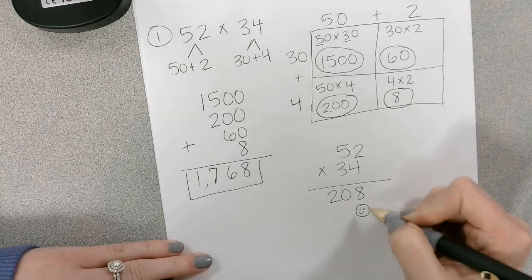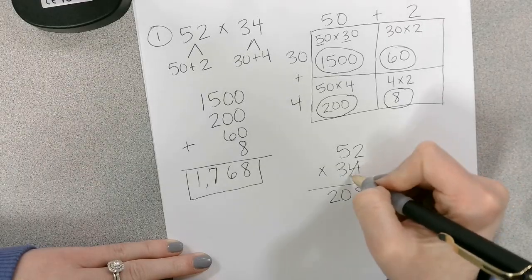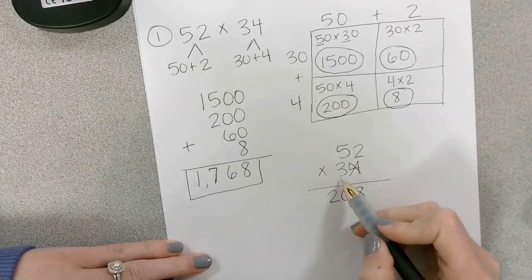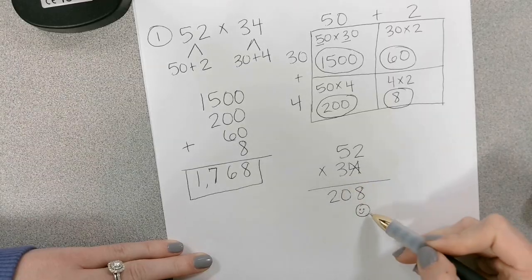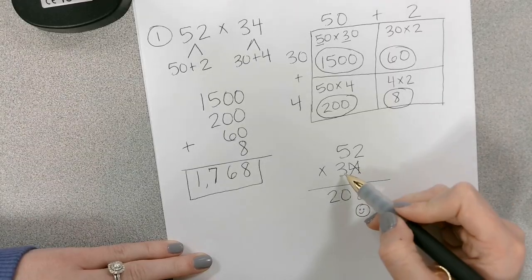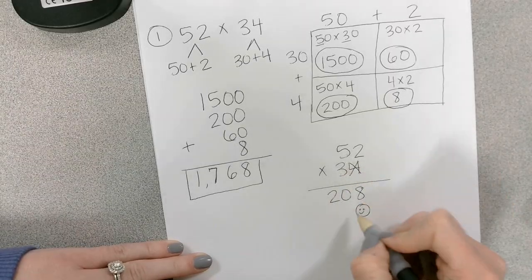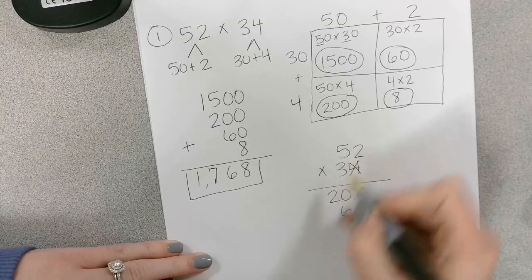And we have to drop that zero. I like to put a smiley face in it so we know we're almost done. I'm done with the 4. So now we have 3 times 2, which we know is really 30 times 2. But since we have a placeholder, we look at that as 3 times 2. So 3 times 2 is 6. 3 times 5 is 15.